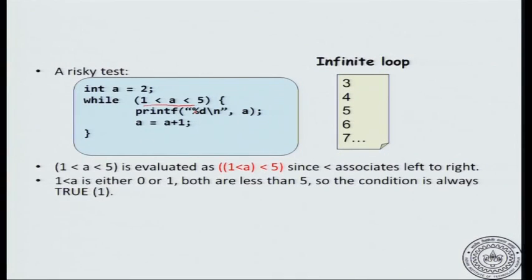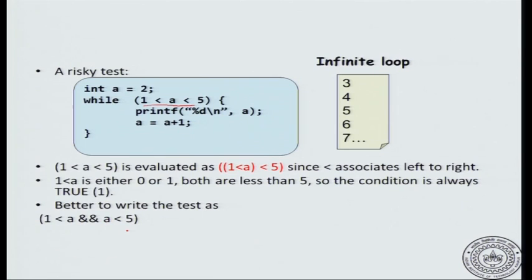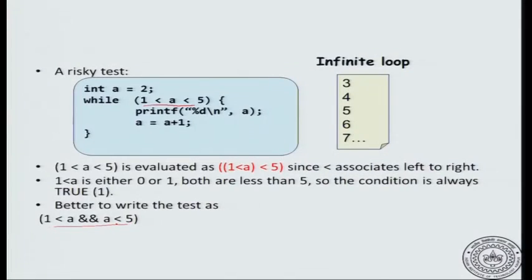What you probably mean is to check that a is between 1 and 5. The correct way to write such an expression is: 1 < a && a < 5. That will check the betweenness condition. Notice this is different from how we normally write it in mathematics — but writing it as 1 < a < 5 in C will cause an infinite loop, because C applies precedence and associativity rules, not what you think it should do.